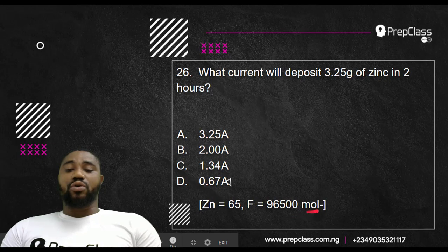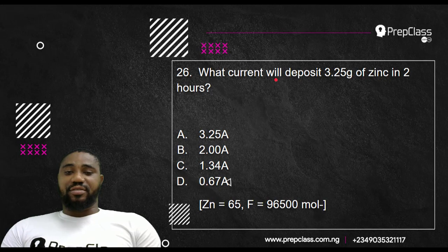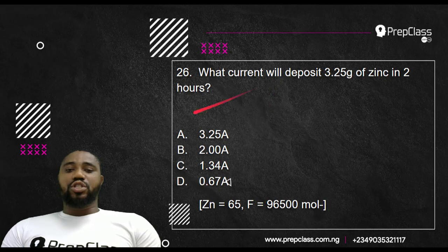This unit is wrong. It's supposed to be 96,500 coulombs. Obviously, you can see that this question is from electrolysis. Faraday says that the mass of an element discharged through electrolysis is proportional to the quantity of electricity passing through the electrolyte.